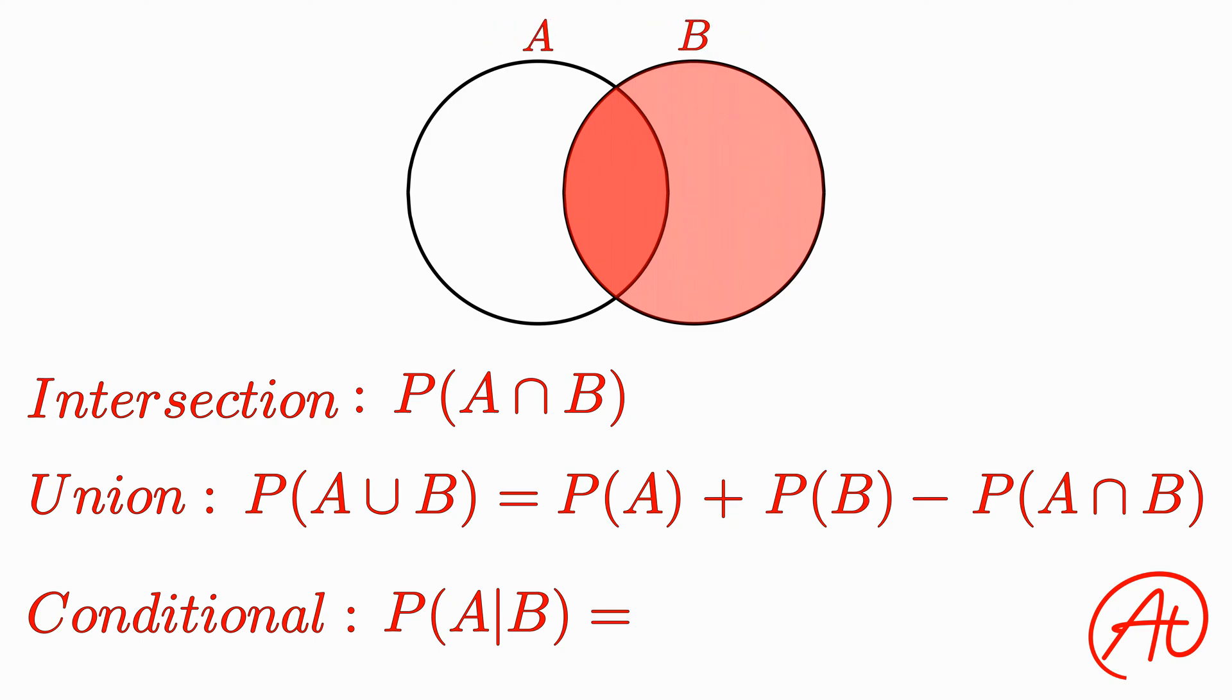Well, we already know that B occurs, so essentially we want to find what fraction of the circle B that also includes A occurring. Therefore, we can calculate the probability of A given B by dividing the probability of A and B occurring by the probability of B.